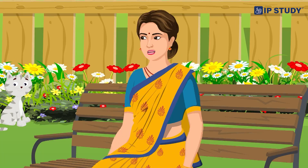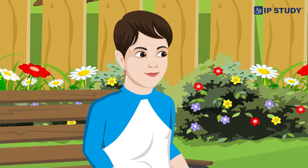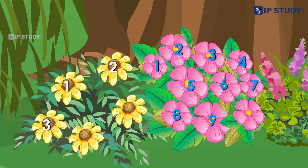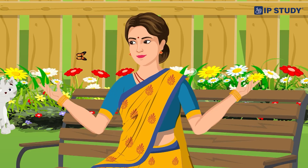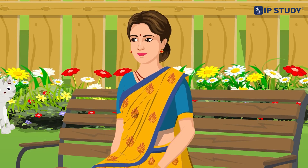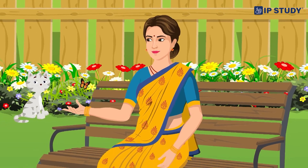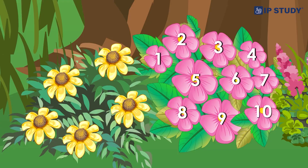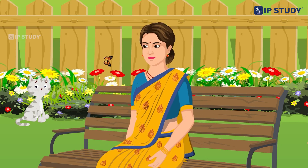Great job, Urvashi! That's our first group of ten. Aman, can you find more flowers? Yes — I see one, two, three, four, five more flowers. Perfect! Now let's put it all together. We have one group of ten and five more. How many is that? 11, 12, 13, 14, 15 — we have 15!